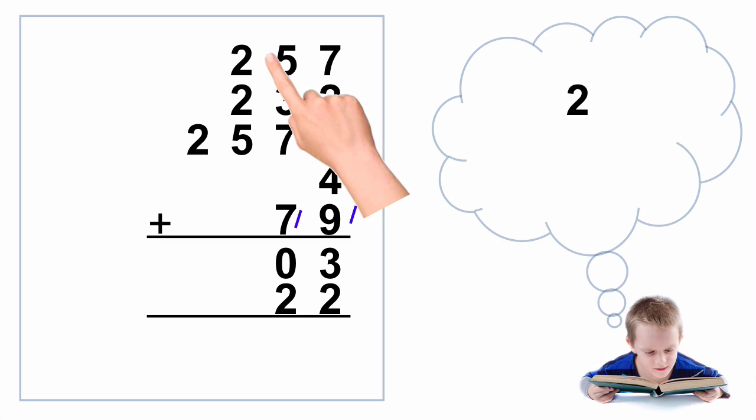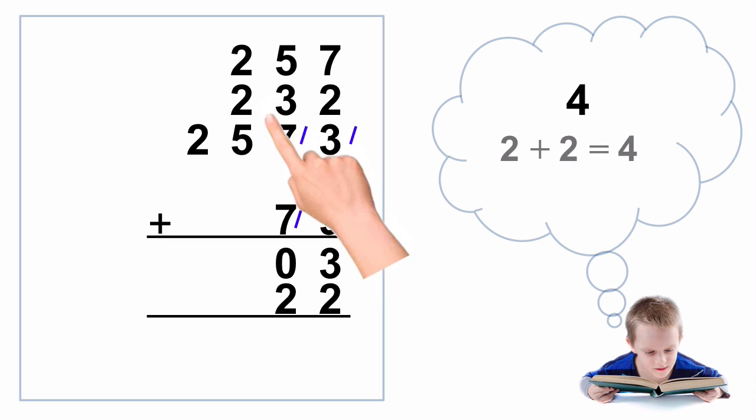We go to the next column. We start off we have 2, plus 2 is 4, plus 5 is 9. So there's the answer for this column. We'll put down 9. We have 0 marks for that column.